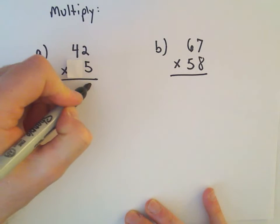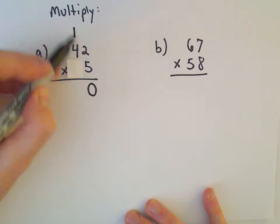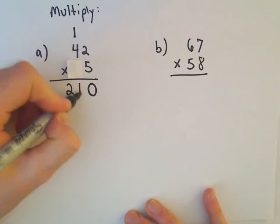So I'm not going to write it all down this time. We'll keep the zero and we'll carry the 1. 5 times 4 is 20, we add 1, that'll give us 21.